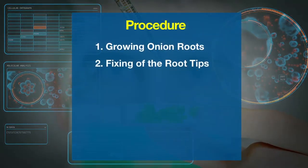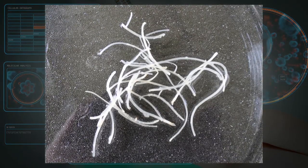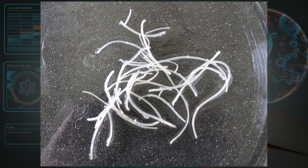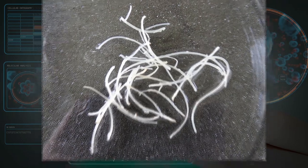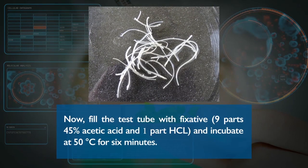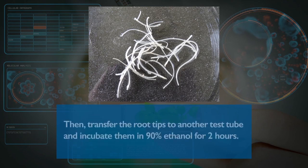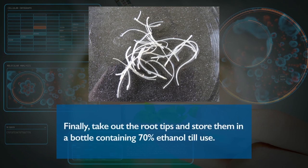The next step is fixing of the root tips. To harvest the root tips, take the onion bulb and cut off about 1 cm long pieces of the root tips and transfer them into a test tube. Fill the test tube with fixative and incubate at 50 degrees Celsius for 6 minutes. Then transfer the root tips to another test tube and incubate them in 90% ethanol for 2 hours. Finally, take out the root tips and store them in a bottle containing 70% ethanol until use.